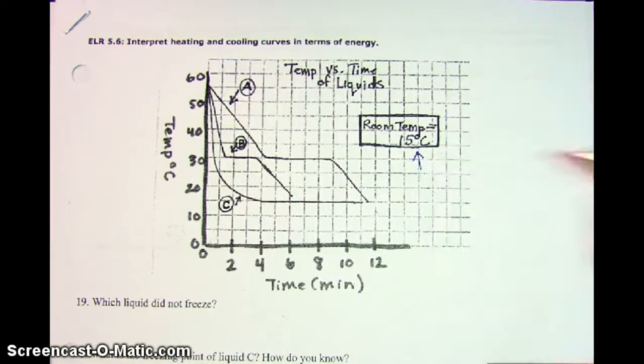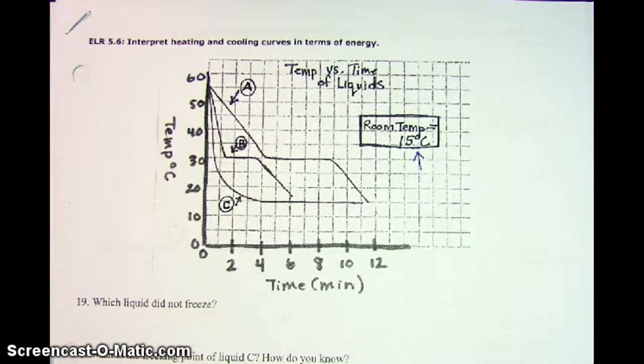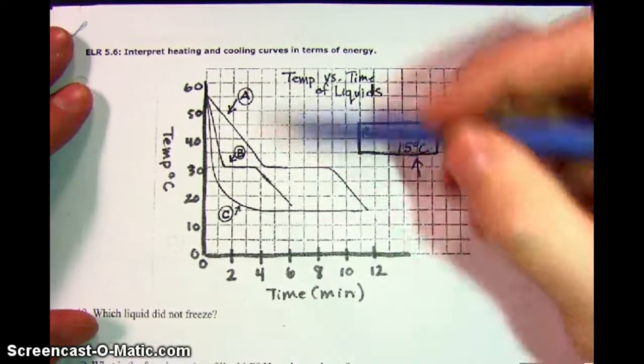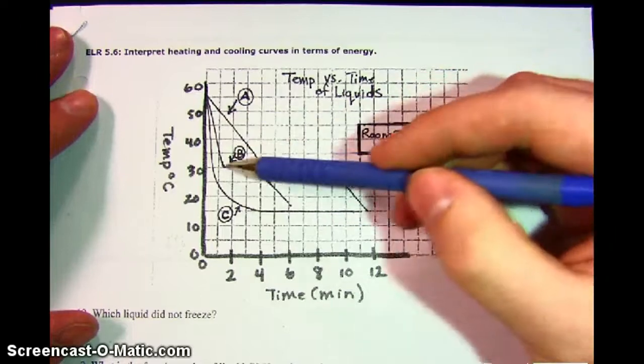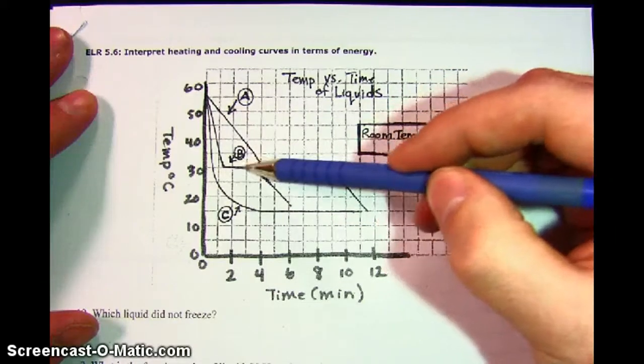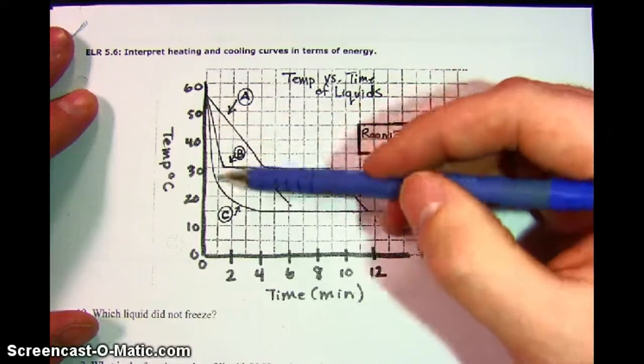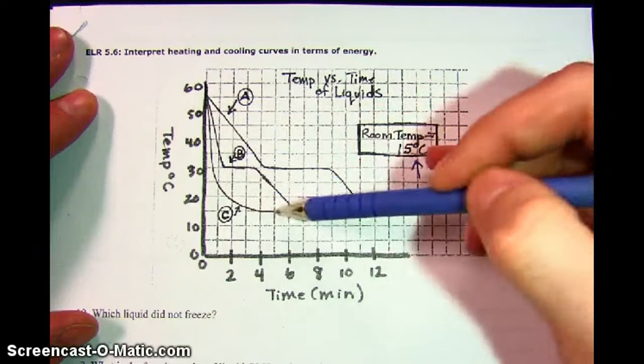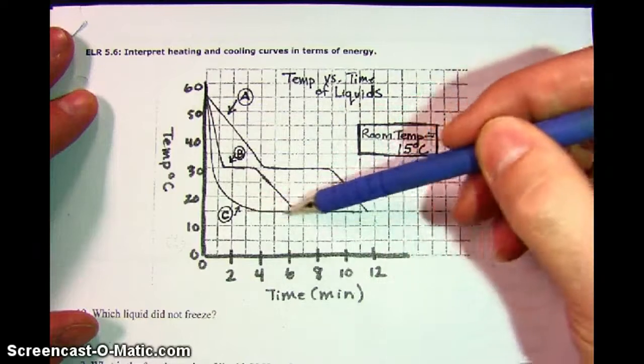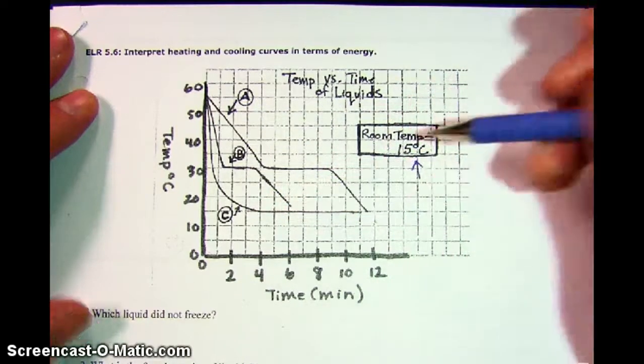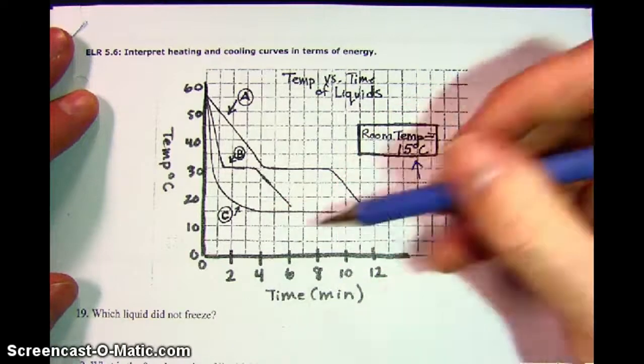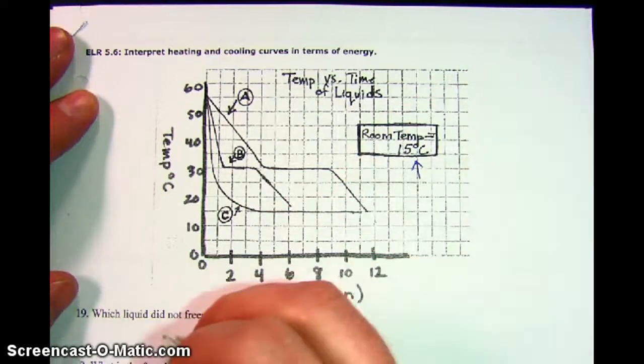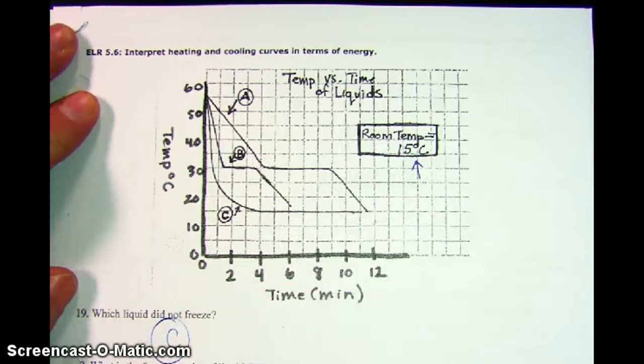It says that the temperature of the room is 15 degrees. If you look at A, it looks like it has its phase change before it dips down that far. B, same thing, had that phase change before it got down to 15. But C has its flat line right on top of 15, which suggests that the temperature of the room is what's affecting this flat line, not a phase change. So, C is the right answer there.